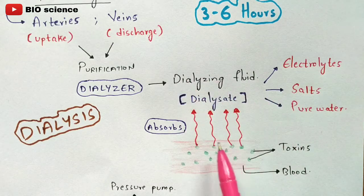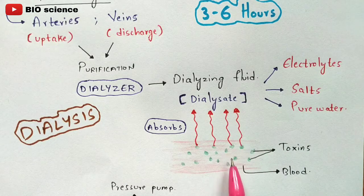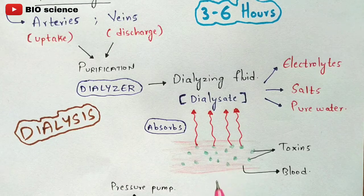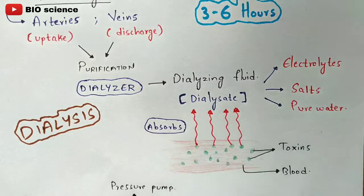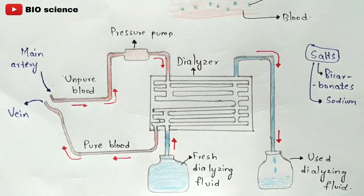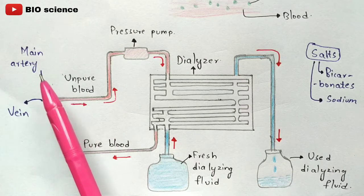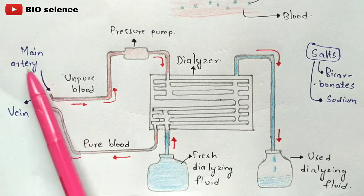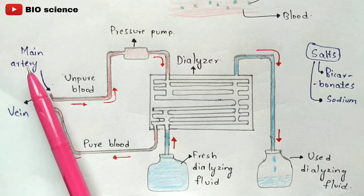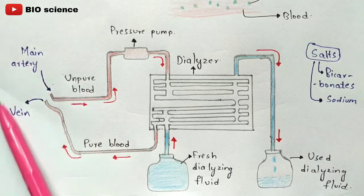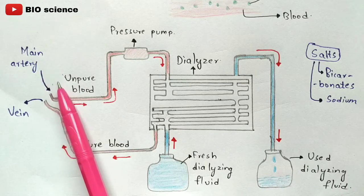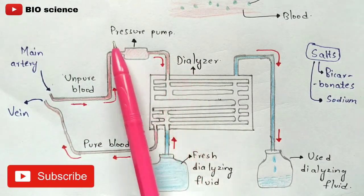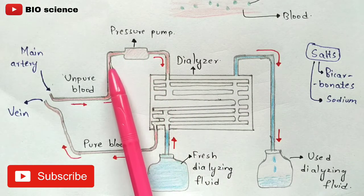Once the toxins are absorbed by the dialysing fluid, the blood becomes pure. The now-pure blood is then sent into the veins. To explain the process using the diagram: this is the main artery, and this is the vein. From the main artery, the impure blood is extracted from the patient and pumped into the dialyser through a pressure pump.